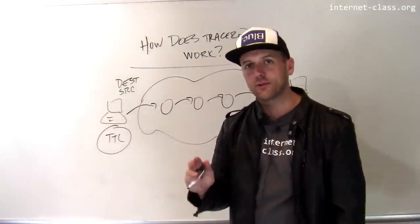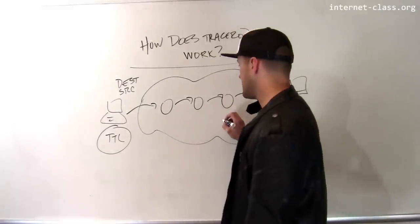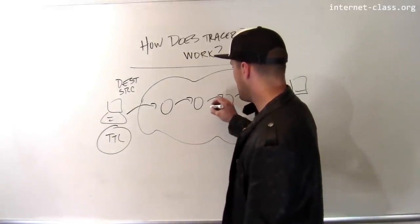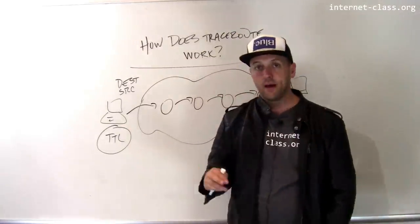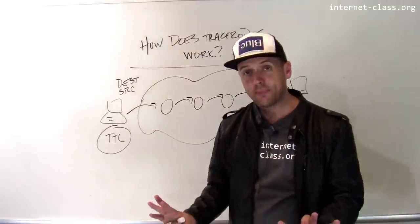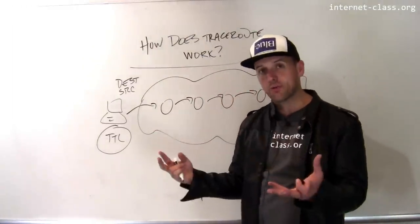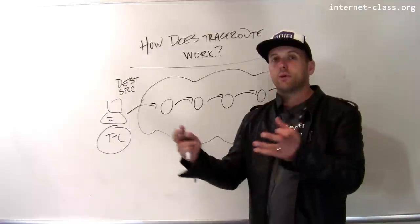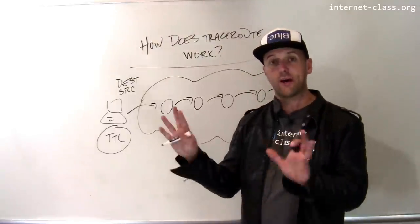The time to live field is normally used to prevent routing loops. So let's say that there's a misconfiguration in the network, and some packet ends up being routed back and forth between these two routers. Unfortunately, if that happens, that packet could just sit there going back and forth forever, consuming network resources, and we can never get rid of this packet. It's never going to get where it's going because there's some sort of routing misconfiguration, but it's also going to be stuck there forever.